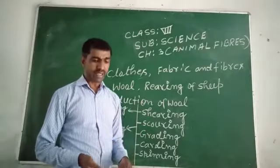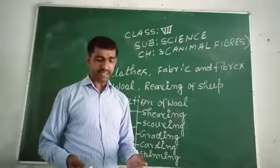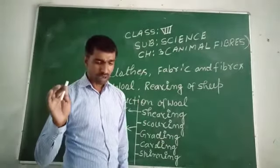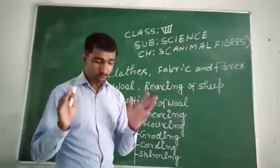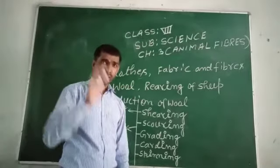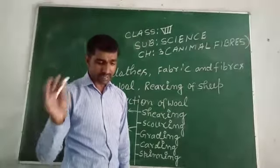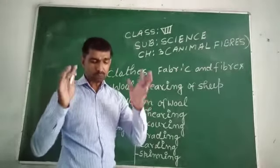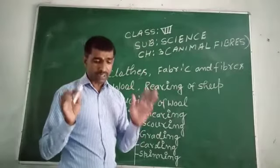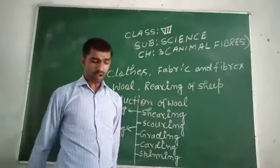After scouring, grading. Separating the fleece based on the quality of fibers is called grading. The wool from the shoulder and sides of the sheep is the best quality. The wool from the hind legs of the sheep is used to make carpet, and soft fluffy fibers called burrs are removed in the process of grading.